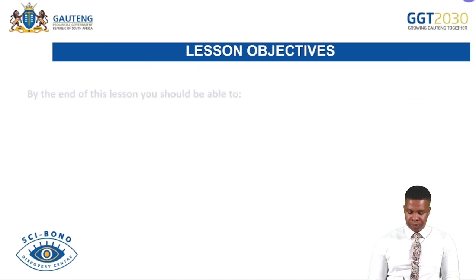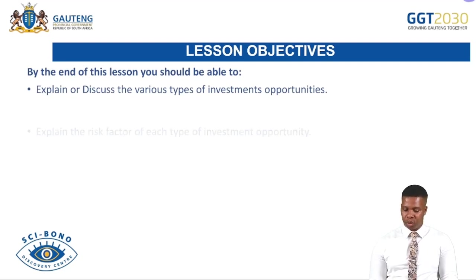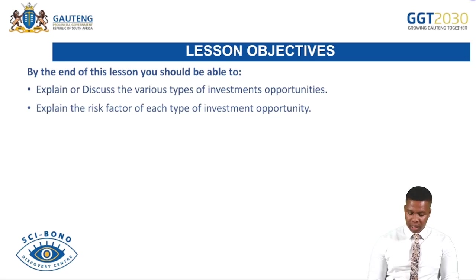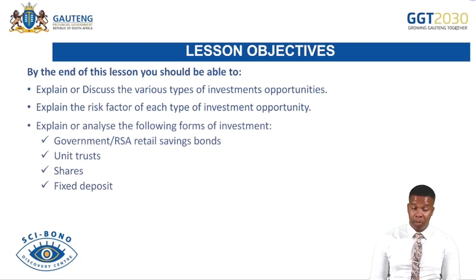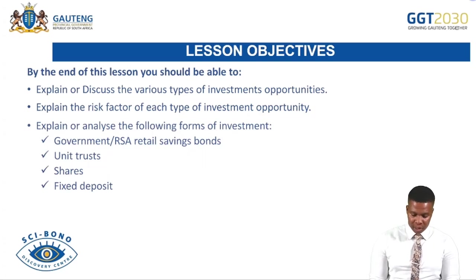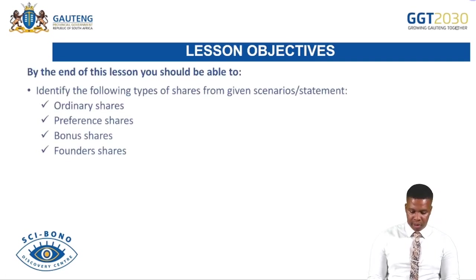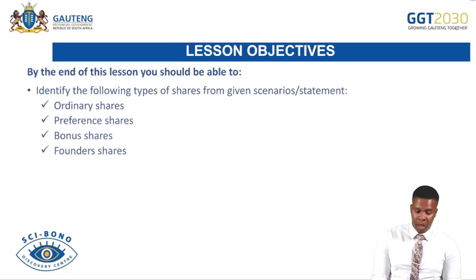As we proceed, you should further be able to explain or discuss various types of investment opportunities and explain the risks associated with each. You will also look into explaining or analyzing the following forms of investment, including the impact — meaning the positives and negatives — for government RSA retail savings bonds, unit trusts, shares, and fixed deposit. You should also be able to identify types of shares: ordinary shares, preference shares, bonus shares, and founder shares.